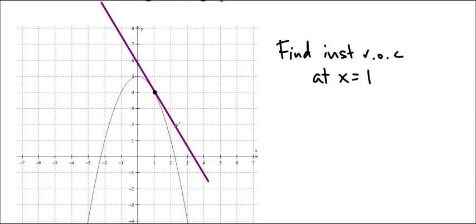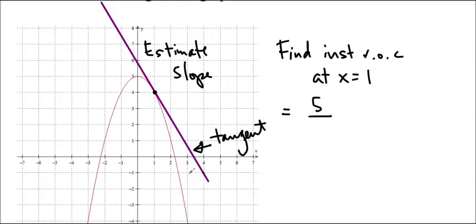So in order to find the instantaneous rate of change, I'm going to estimate the slope, because this is now my tangent. So that would be my instantaneous rate of change, right? That's the definition. So to do that, I'm just going to estimate the slope a little. It's kind of going through here. So the change in y, 1, 2, 3, 4, 5, over the change in x, 1, 2, 3. So that's about 5 over 3.